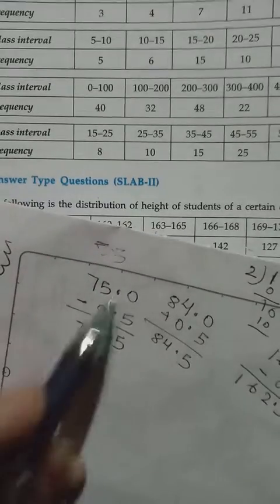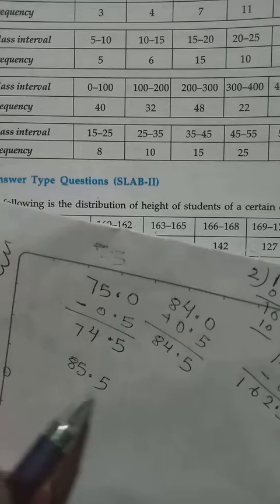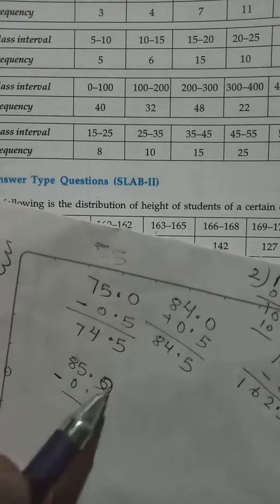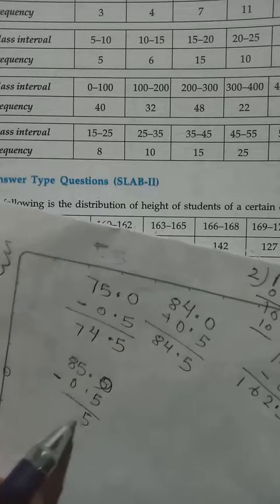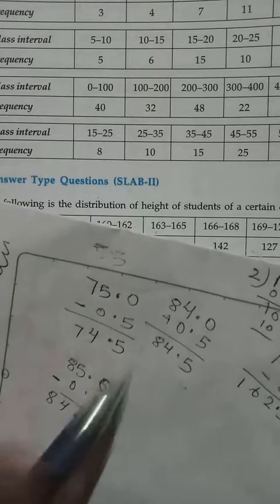Then again, 85, we have to minus from 0.5. Because it's the lower limit. So when we minus, we get 84.5. Here, can you see, these two are equal.